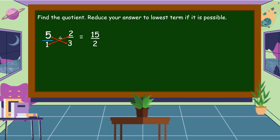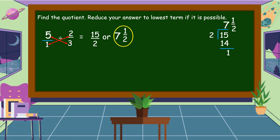So, paano natin gagawin itong mixed fraction? Just divide the numerator by the denominator. So, fifteen divided by two. The answer is equal to seven. Seven times two is equal to fourteen. Fifteen minus fourteen is equal to one. Tapos, itong one na remainder natin ay gagawin nating numerator, at ang two na divisor ay gagawin nating denominator. So, fifteen halves is equal to seven and one-half. This is our final answer.